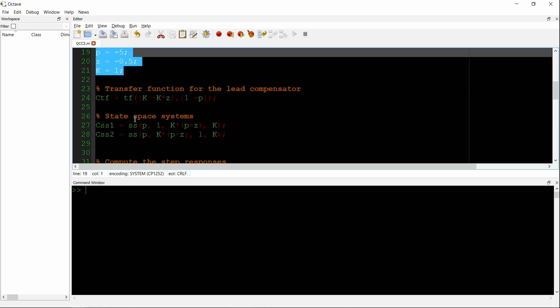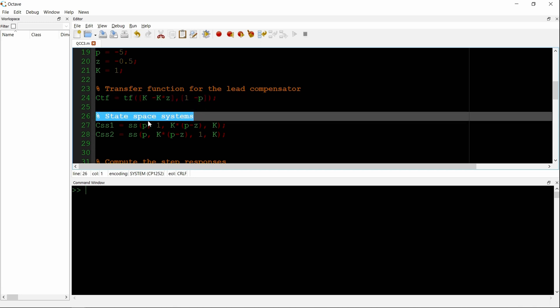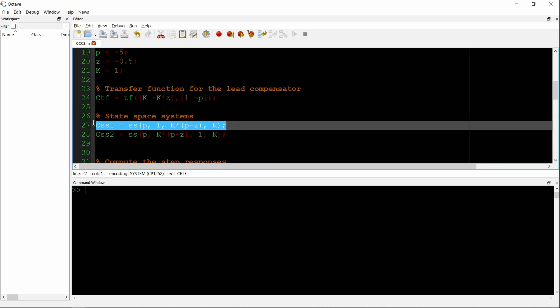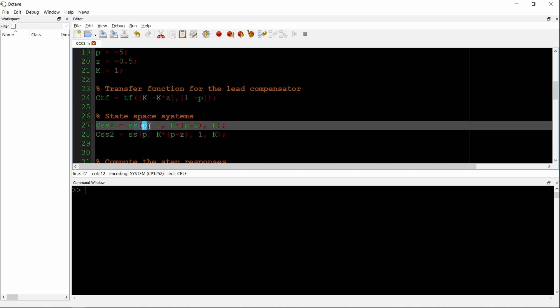The transfer function is first defined with the function TF. And that means there are two inputs, the numerator, the coefficients of them, and then the denominator coefficients.